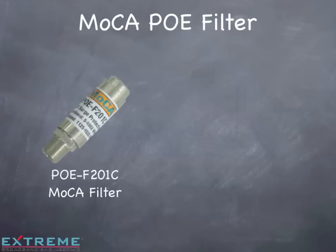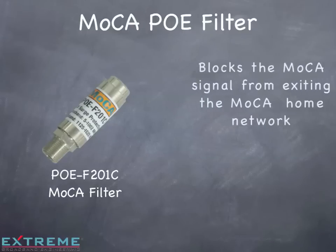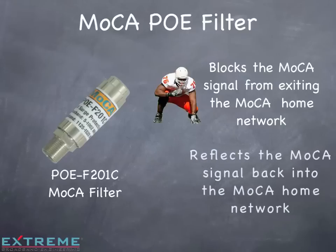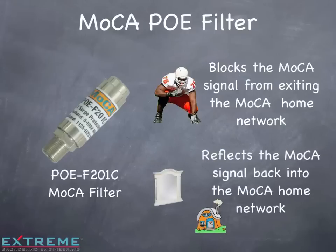The PoE-F201C is a compact MoCA point-of-entry filter with surge protection that performs two functions. It blocks the MoCA signal from exiting the MoCA home network with high attenuation at the MoCA frequencies, and reflects the MoCA signal back into the MoCA network for improved performance.